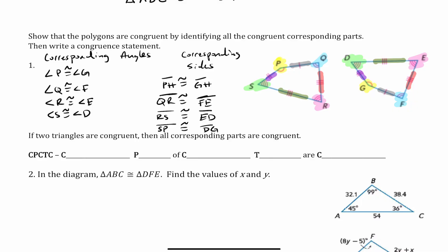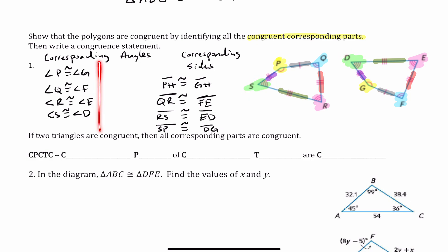Now we're going to move on. It says: show that the polygons are congruent by identifying all the congruent corresponding parts, then write a congruent statement. The corresponding angles — based on the number of arcs — are: angle P is congruent to angle G, angle Q is congruent to angle F, angle R is congruent to angle E, and angle S is congruent to angle D.